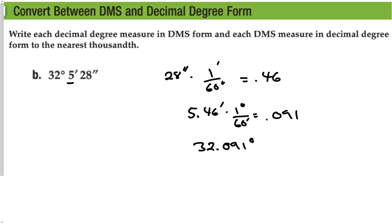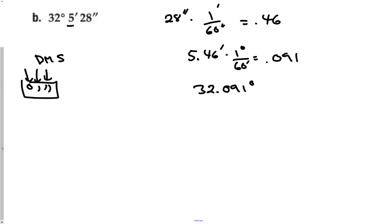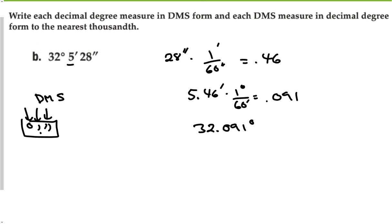There's good news: most calculators have a button that will do this conversion for you. You should find on your calculator a DMS button or a button that looks like degrees, minutes, seconds all on one button — it looks like a bunch of commas or quotes put together. If you type in an angle and press that button, you'll get a conversion back and forth. Either figure out how to do it with your calculator or make sense of the conversions to go back and forth.